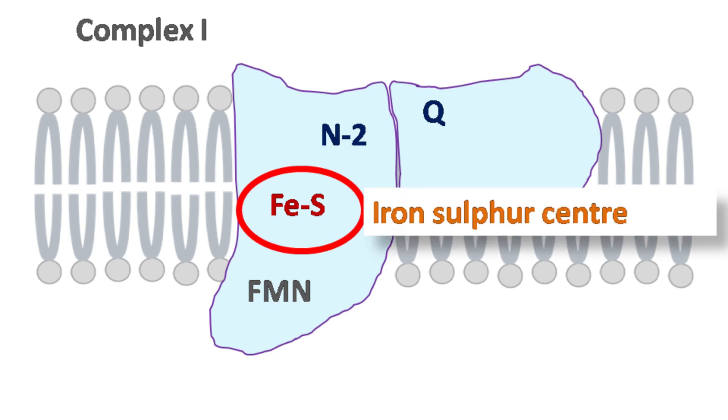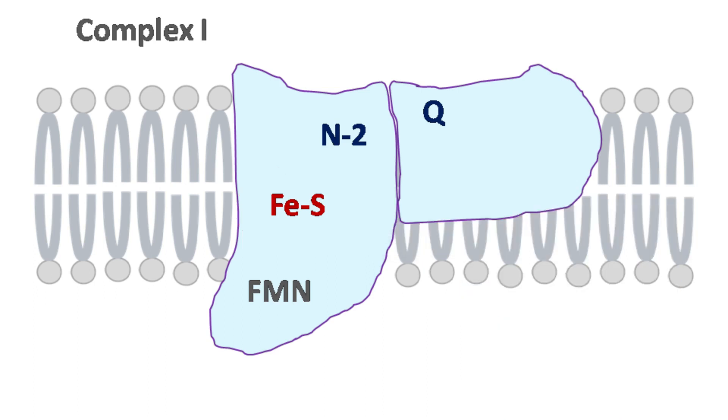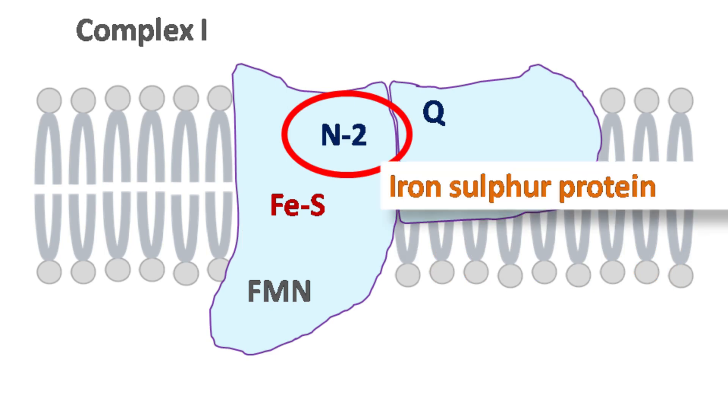Iron sulfur center is a complex in which iron is surrounded by sulfur atoms of cysteine residues of the polypeptide chain. N-2 is again an iron sulfur protein involved in electron transfer.